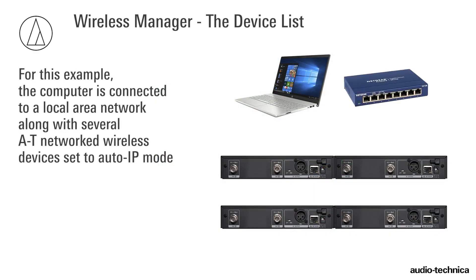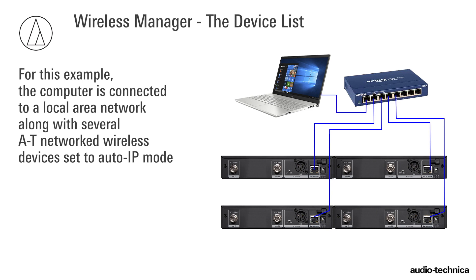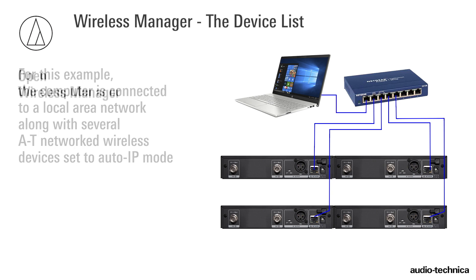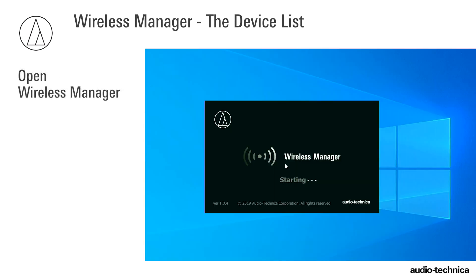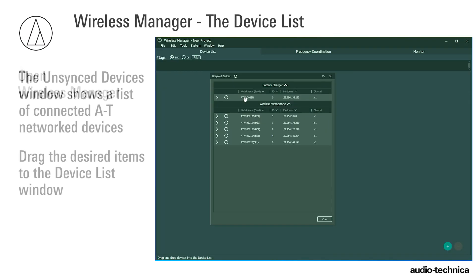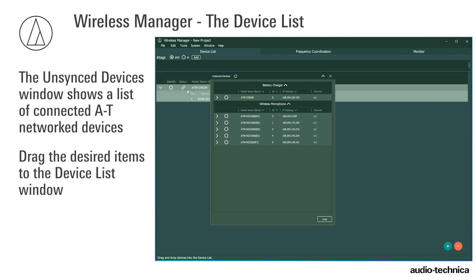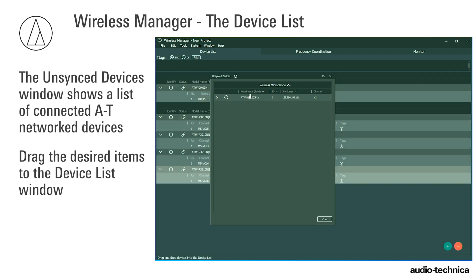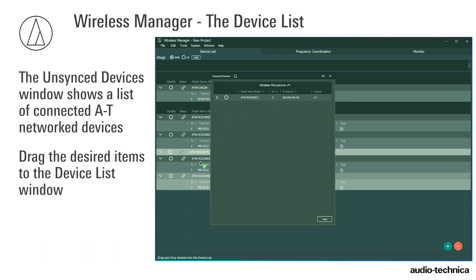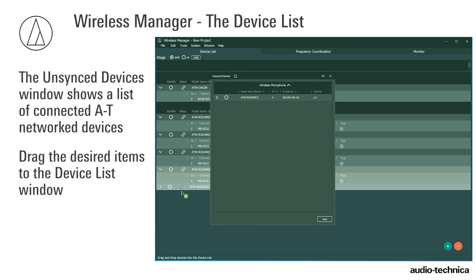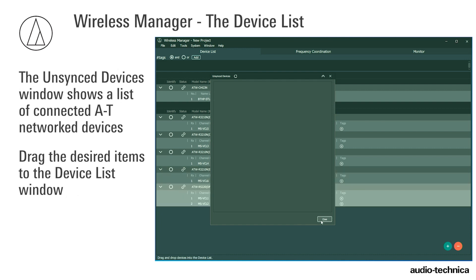For this example, the computer is connected to a local area network along with AT networked wireless devices set to Auto IP mode. Open Wireless Manager. When the Unsync Devices window opens showing a list of connected devices, drag the desired items into the device list window.